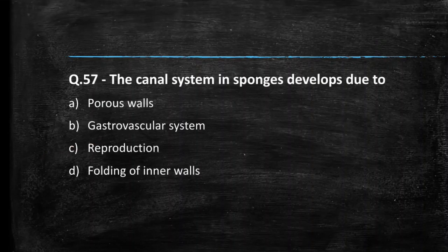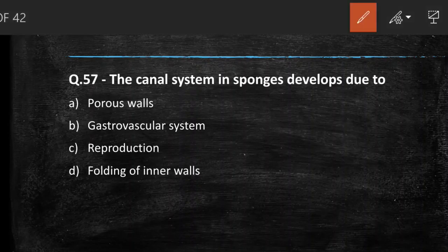Next question: the canal system in sponges develops due to porous wall, gastrovascular system, reproduction, or folding of the inner wall? You have to remember this — in sponges, the canal system develops due to folding of inner walls. So the answer is option D.